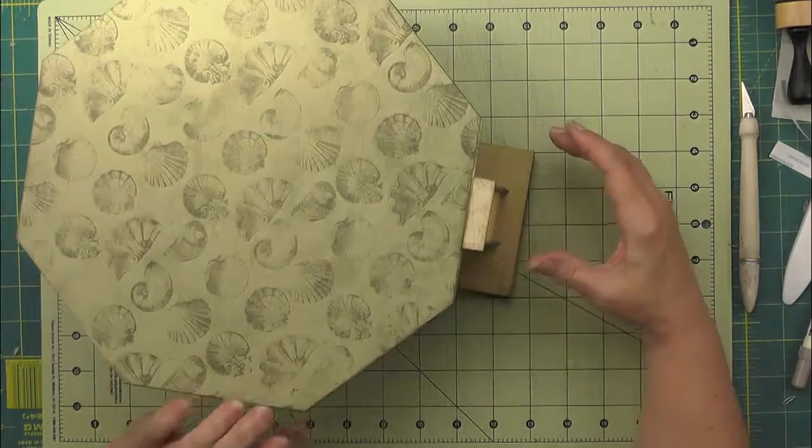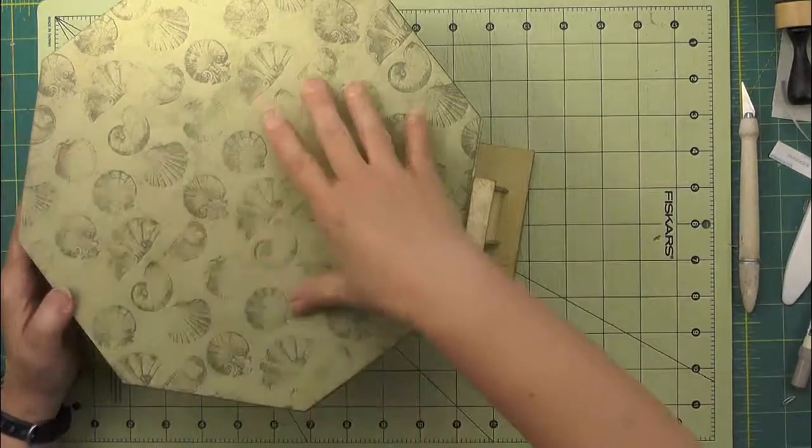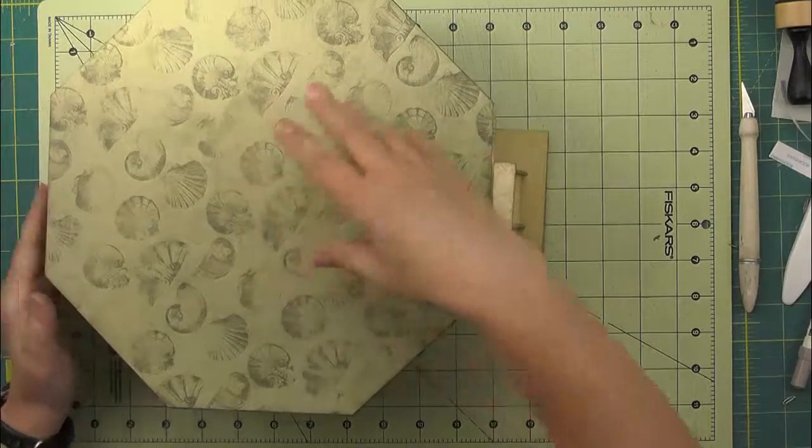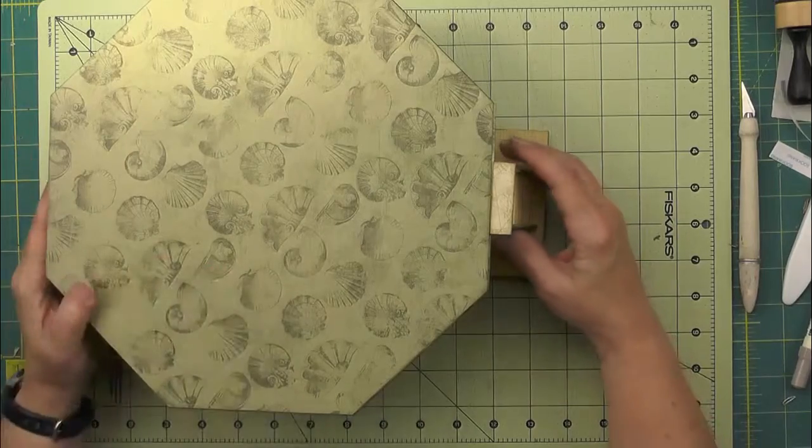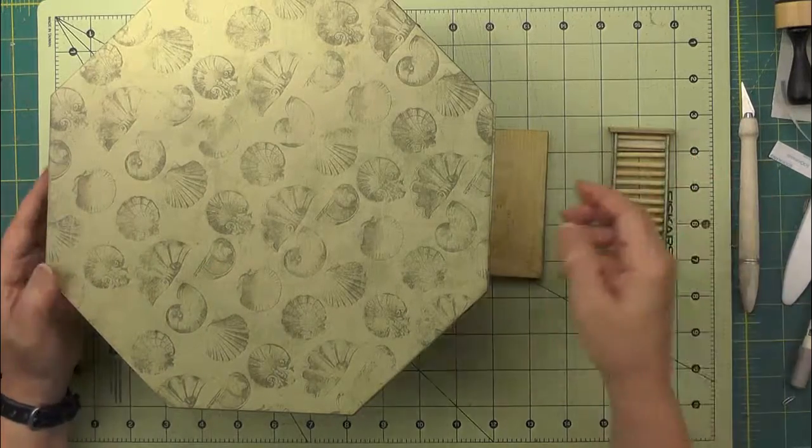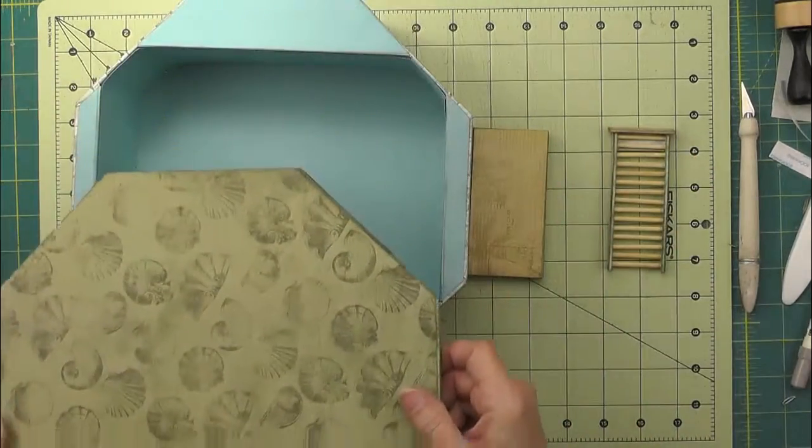And then when we want to... Of course, the lighthouse is going to get attached here. But then when we want to open up the project to get to the mini album, we can just remove the ladder and then the lid can come off.